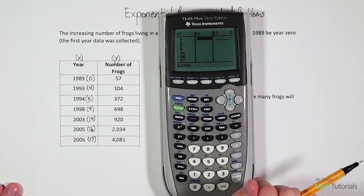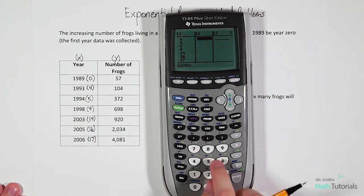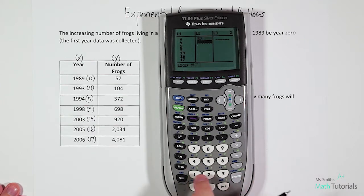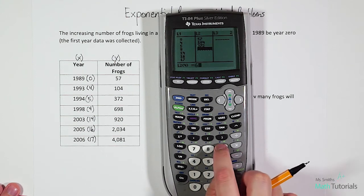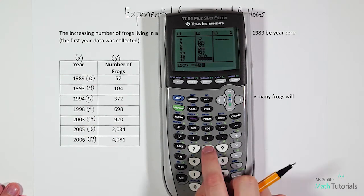Then we'll right arrow over to the list two, and we'll add our number of frogs for each year: 57, 104, 372, 698, 920, 2034, and 4081.